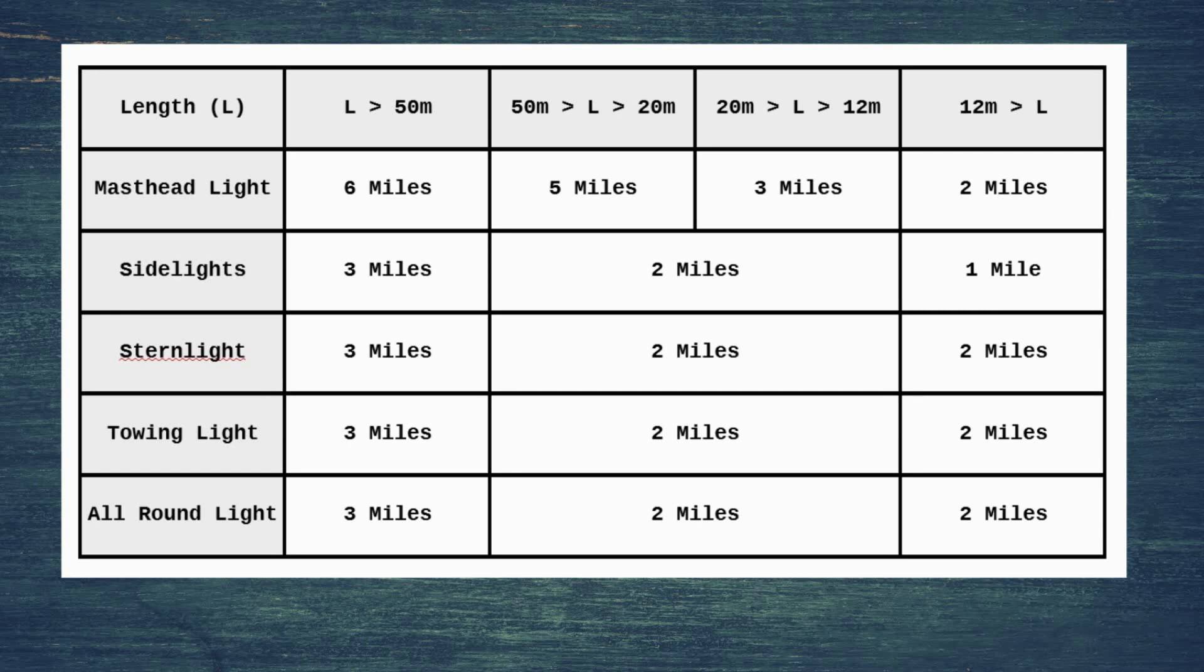The reason for this is if you're approaching the vessel from a different side, you still want to see it at a reasonable distance because you're not going to be able to see that masthead light which has got that range of 2 miles.